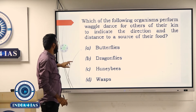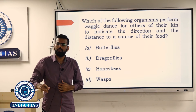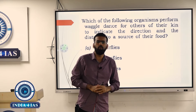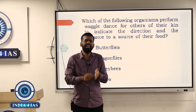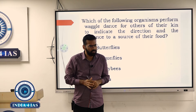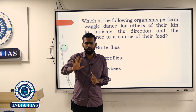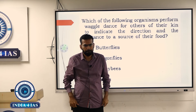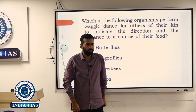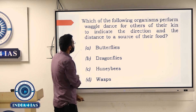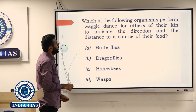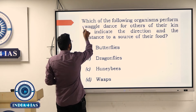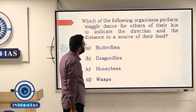In the last year's environment questions, and even in 2022-21, UPSC has been asking very unconventional questions which you won't easily find in one book. Consider: 'Which of the following organisms perform waggle dance for others of their kin to indicate the direction and distance to a source of food?' Now when you read a question, try to identify the keywords.